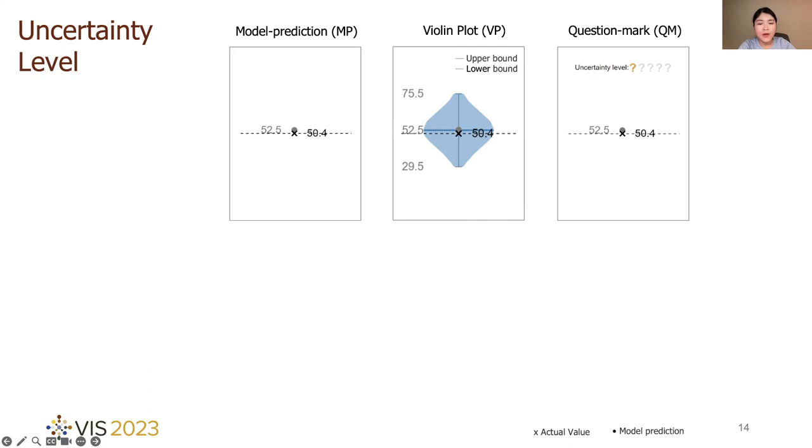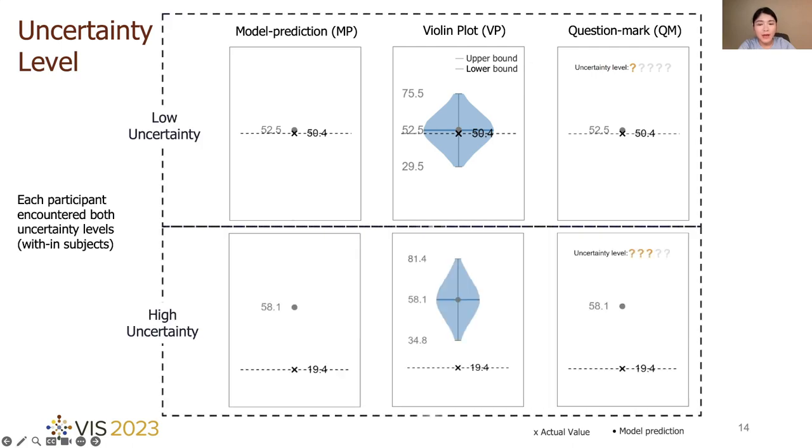Except different visualizations for model result, our study also considered two different uncertainty levels: low model uncertainty and high model uncertainty. Each participant encountered both uncertainty levels.